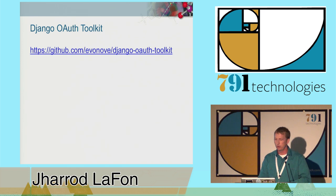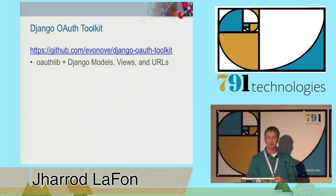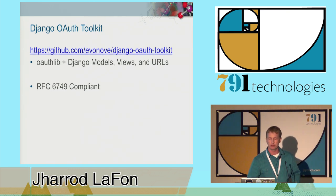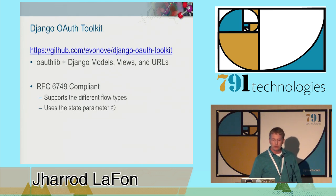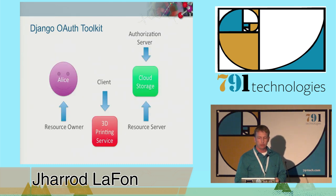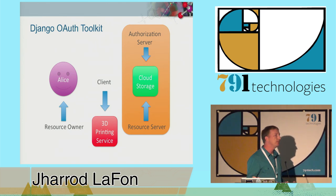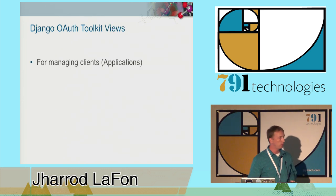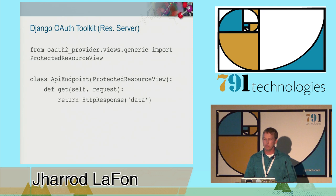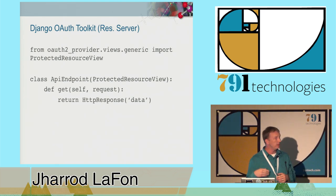Next I'm going to talk about Django OAuth Toolkit. It's implemented essentially as OAuthLib plus some models, views, and URLs. It's RFC 6749 compliant, which means it supports other flows, not just the authorization code flow that most packages implement. It also uses the state parameter and validates the redirect URI. From their docs, they call it 'OAuth 2 goodies for Django,' and it works quite well. Django OAuth Toolkit gives us both the authorization server and the resource server. It gives you built-in views for managing clients—or what they call applications—and for managing tokens. It also gives you mixin classes for protecting resources by requiring a token to be present in order to access that view. You can import the protected resource view, and before your code is executed, it ensures a token has been presented and sets request.user.